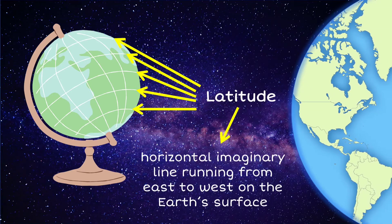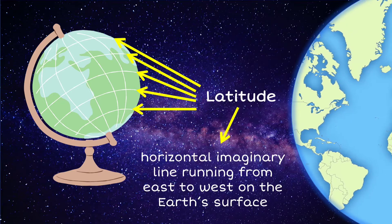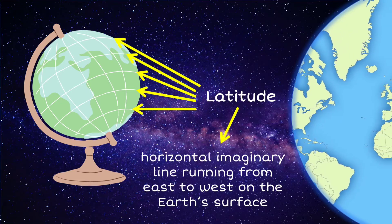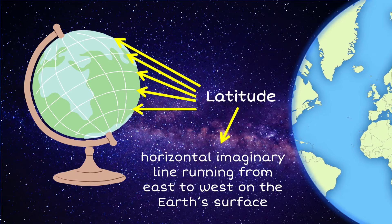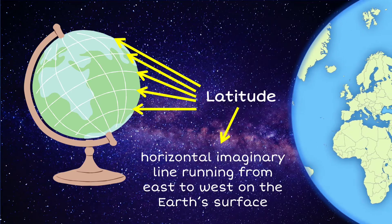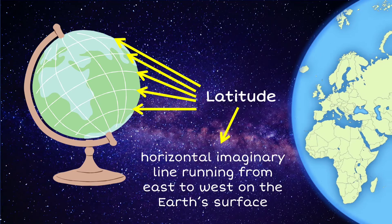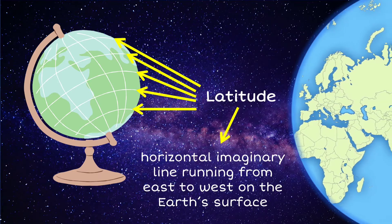Latitude is a horizontal imaginary line running from east to west on the Earth's surface. Lines of latitude or parallels are lines that run parallel to the equator and never intersect. Parallels get smaller towards the poles than closer to the equator.